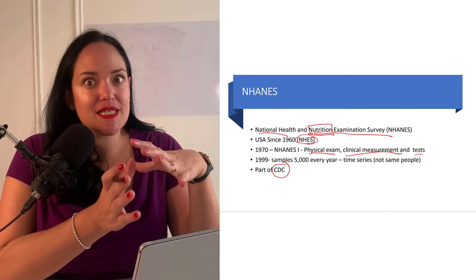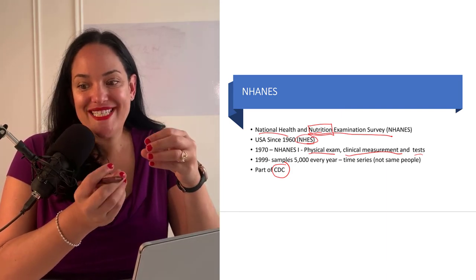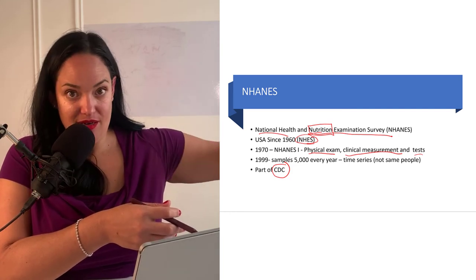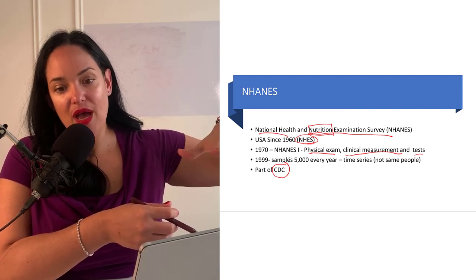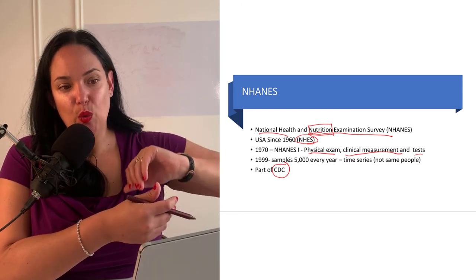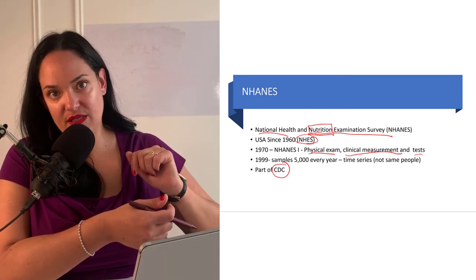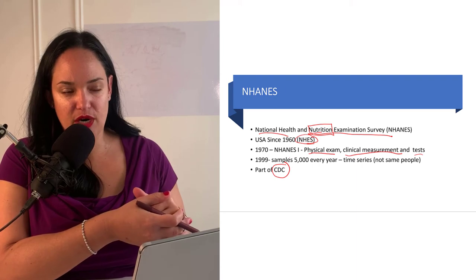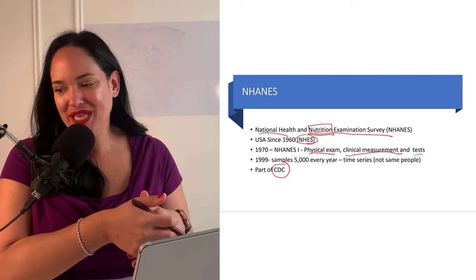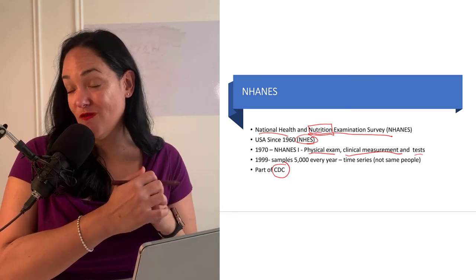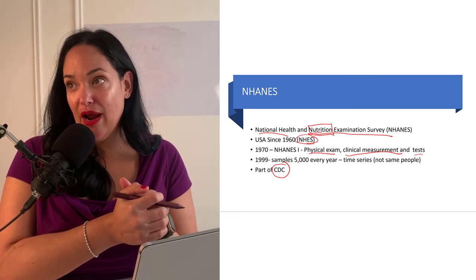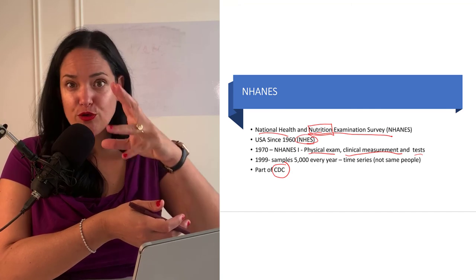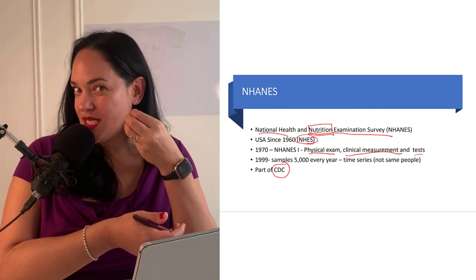These are the big three data collection programs that allow us to understand the health of Canadians or Americans. Knowing the current status lets us say we need more funding for this area, advocate to government for efforts toward a particular issue, or argue that we need to change nutrition recommendations — for example, for vitamin D — because people are not getting enough. That can lead to changes in the Canadian Food Guide or nutrition labels.